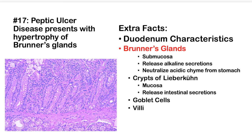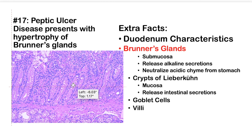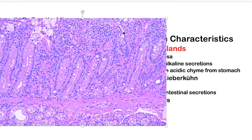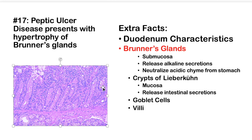Fact 17: Peptic ulcer disease presents with hypertrophy of Brunner's glands. In the duodenum, the submucosa contains unique circular, white/lighter-colored structures — Brunner's glands. These release alkaline secretions to neutralize acidic chyme from the stomach. In peptic ulcer disease, excess acid triggers hypertrophy of these glands. The crypts of Lieberkühn are throughout the small intestine, releasing intestinal secretions, and goblet cells (mucus-secreting) are also present in the villi.